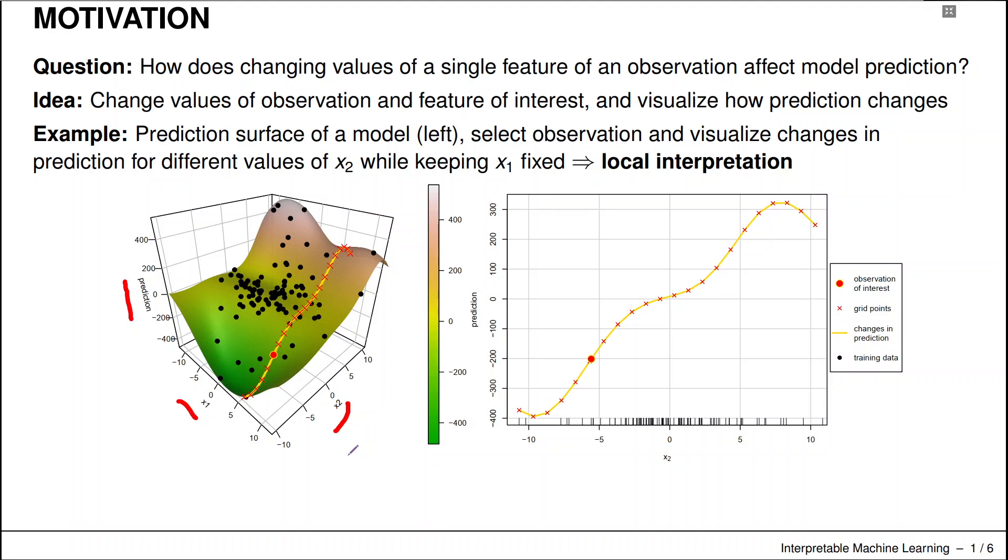Now we select a certain observation, this observation here, and we want to visualize the change in predicted outcome for different values of x₂ while we keep x₁ fixed.